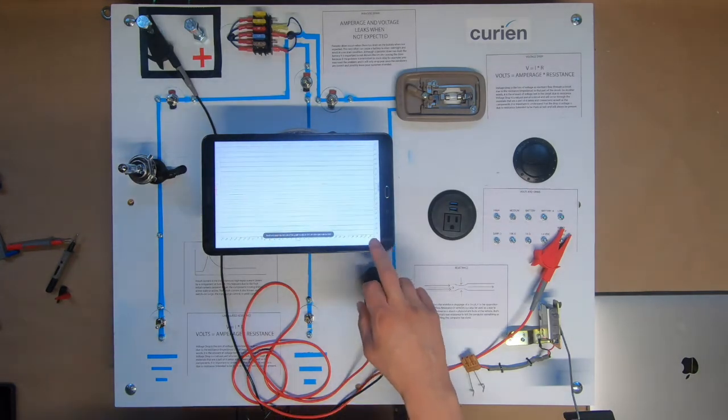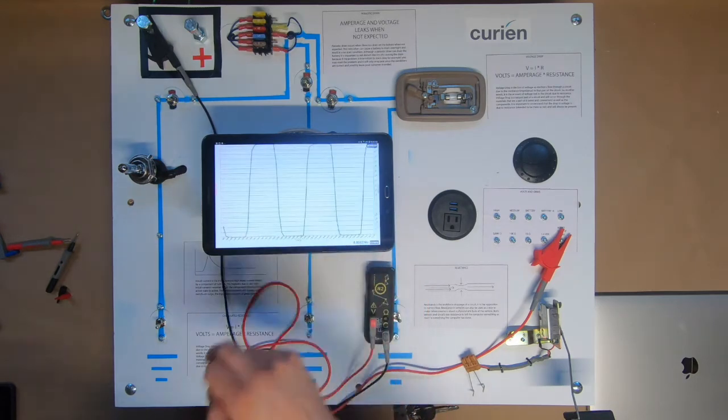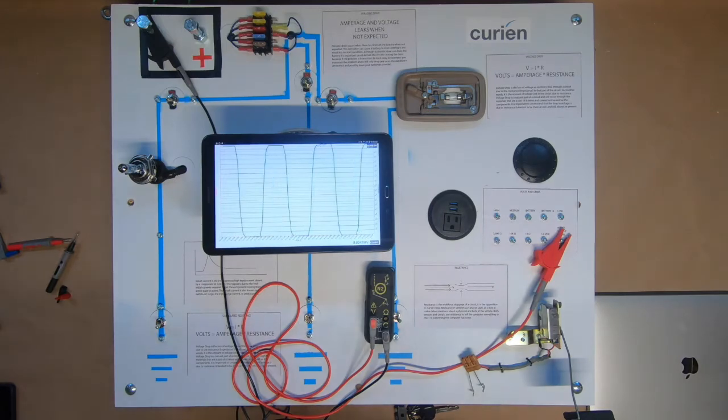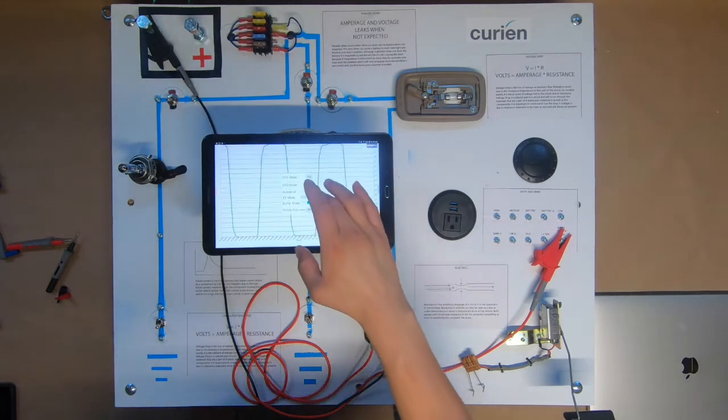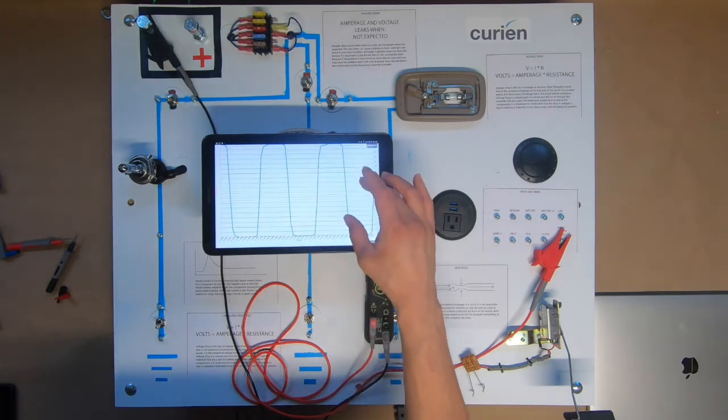What I went ahead and just did on the screen is I upped our frequency or our sample rate from 1000 Hertz to 4000 Hertz, so we can get a better, more clean image of what we're looking at. And as you can see here, we're able to a lot faster pick up the signal and see more than just the spikes, see the flat lines where it's holding at that 9 volts.